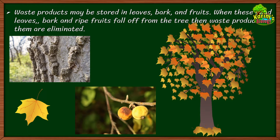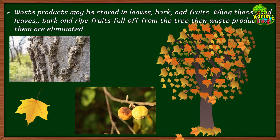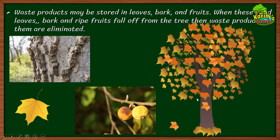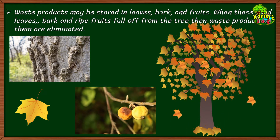Since plants do not have separate excretory organs, waste products may be stored in leaves, bark, and fruits. When these dead leaves, bark, and ripe fruits fall off from the tree, the waste products in them are also eliminated. Plants act intelligently — they transfer waste material to leaves, bark, and ripe fruits, and when those parts are shed, the waste is removed along with them.